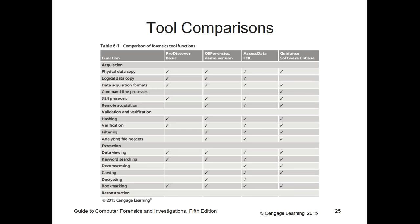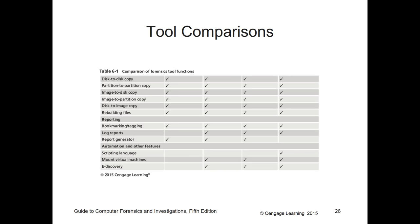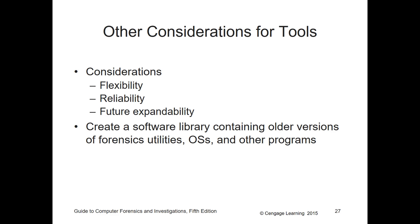For tool comparison, the big tools include ProDiscovery, OS Forensics, AccessData, and NCASE. Honestly, I wouldn't fully trust any comparison chart — do your own research and verify each tool's functionality, because as versions update, so do those charts. Use charts only as a quick reference. Other considerations include reliability, reputation, future expandability, features coming for the tools, and how flexible they are. Also create a software library containing older versions of utilities, since some older software still works where newer versions may not.